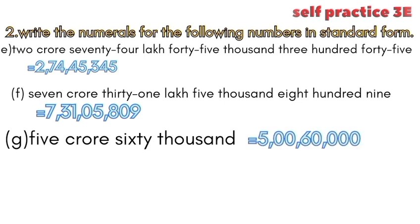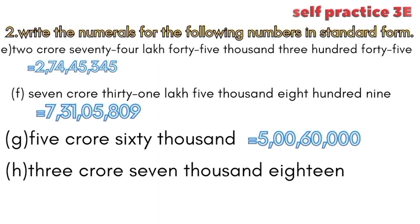G. five crore sixty thousand: 5,00,60,000. H. three crore seven thousand eighteen: 3,00,07,018.